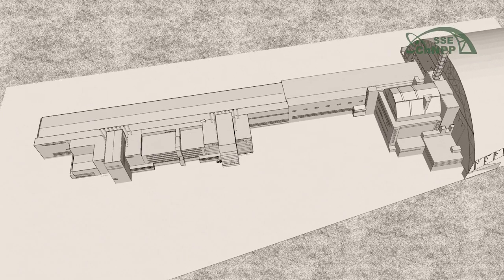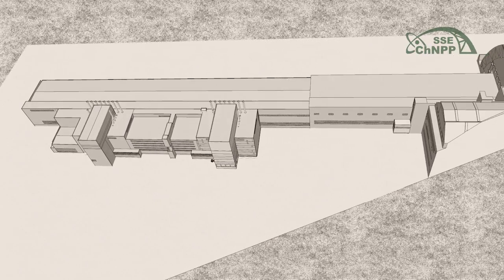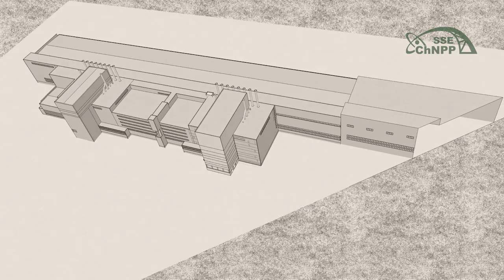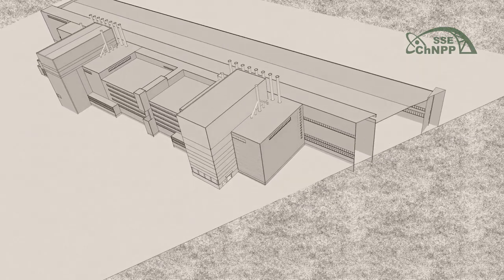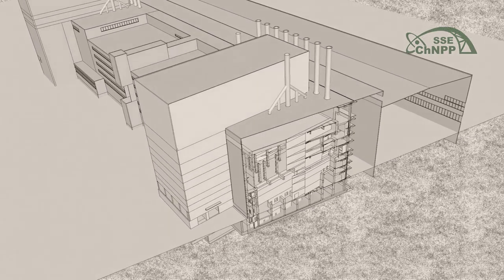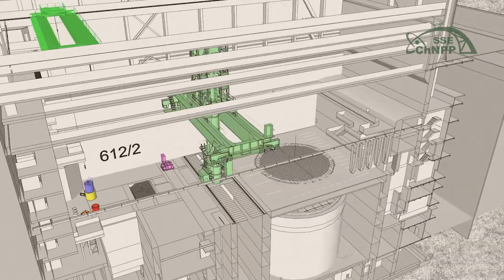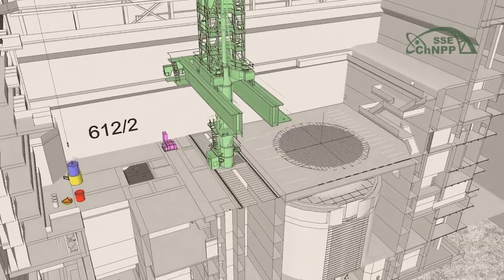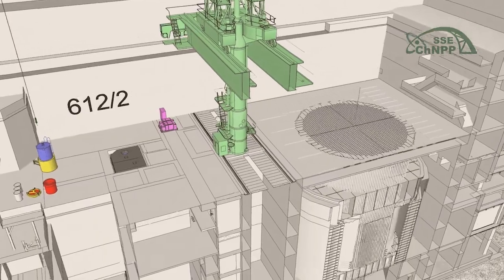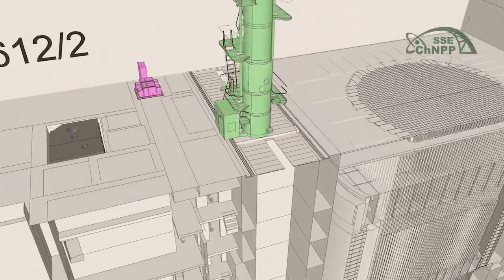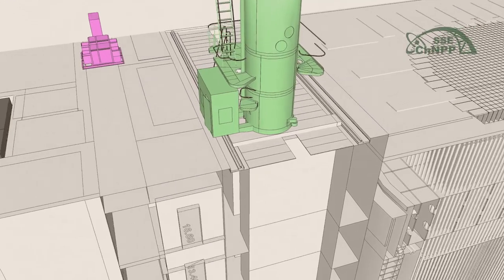A long-length waste cutting facility is planned to be created within the decommissioning of Chernobyl nuclear power plant units. The long-length items include elements of reactor installations with lengths from 6 to 22 meters, which were retrieved from the nuclear reactors during the period of operation or to be generated at the final shutdown and preservation stage.